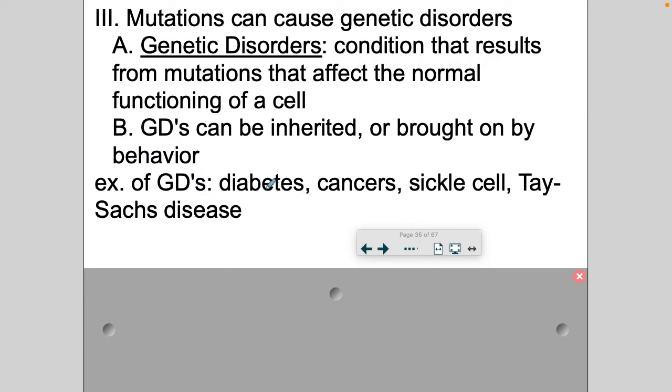Examples of genetic mutations are diabetes, which can be brought on by inheritance. People are born with diabetes. Or it can be brought on behavior. They choose their lifestyle choices. Cancer is the same way. You can inherit cancer or maybe you make some lifestyle choices. You expose yourself to radiation. You decide to smoke. Smoking can cause cancer.